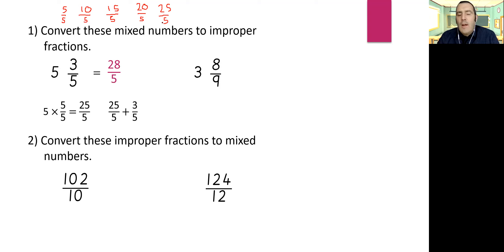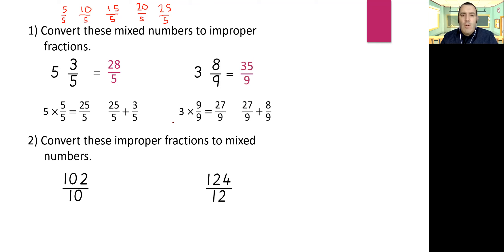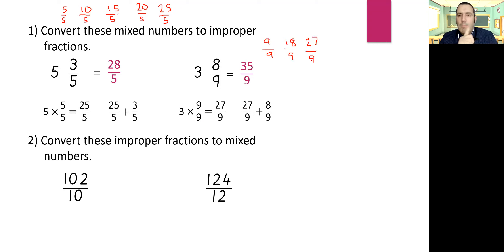It's exactly the same method for three and eight ninths. The only difference is our denominator is nine, and one whole is nine ninths. We've got three lots of nine ninths using repeated addition: one whole is nine ninths, two wholes is eighteen ninths, three wholes is twenty-seven ninths. I need to add the eight ninths to twenty-seven to give me my answer of thirty-five ninths.